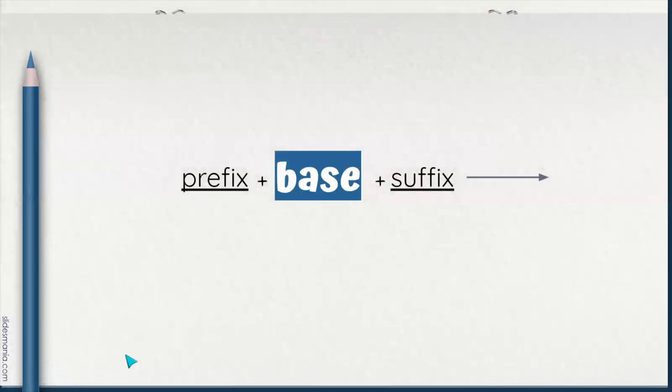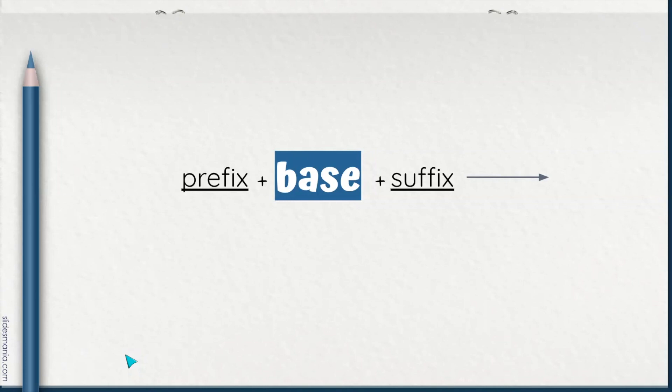Just like when we're building blocks, we can add parts to the base in order to create new words. The words that we build out from a base using a prefix or a suffix — or multiple prefixes, multiple suffixes, or some combination — become part of that word's family. That collection of words that share a base in meaning and share a structure in spelling are considered a word family.